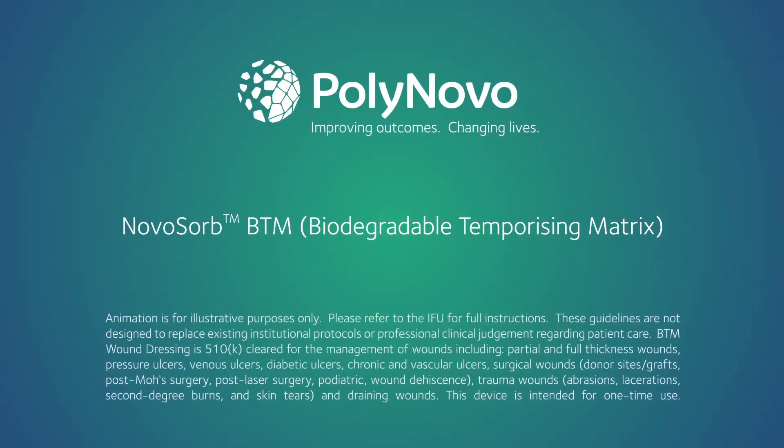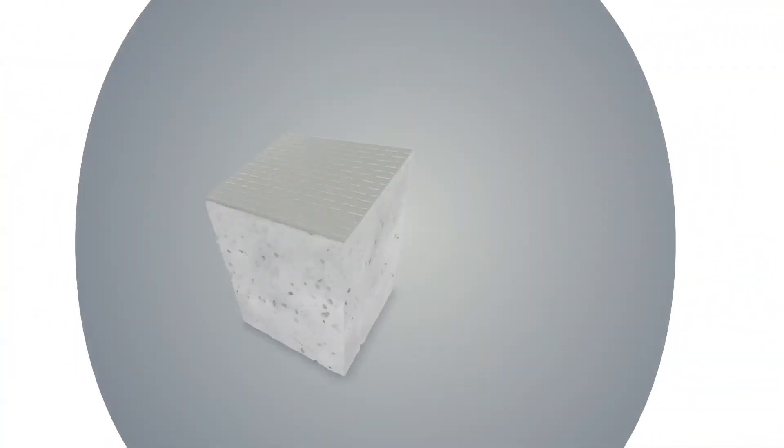Novosorb BTM, a biocompatible and biodegradable polyurethane matrix, is composed of three layers.